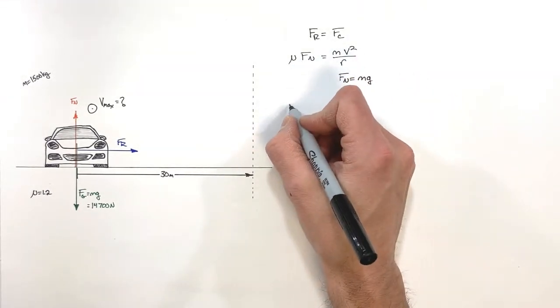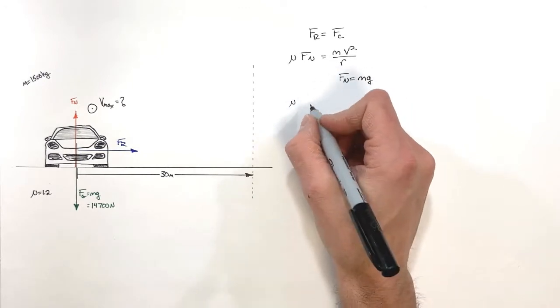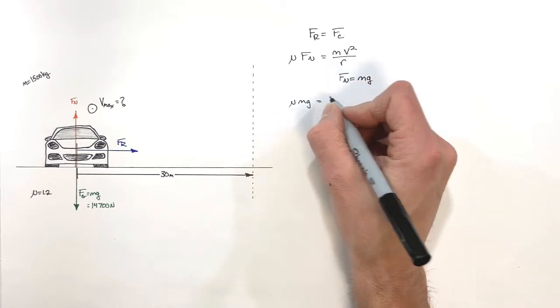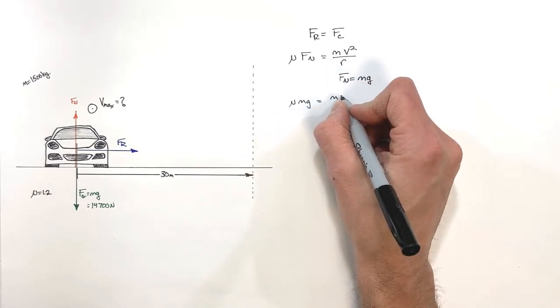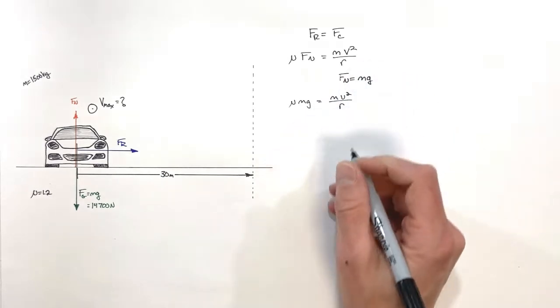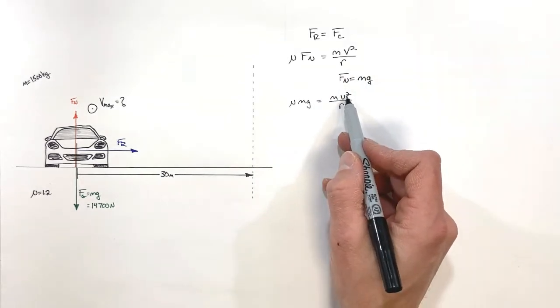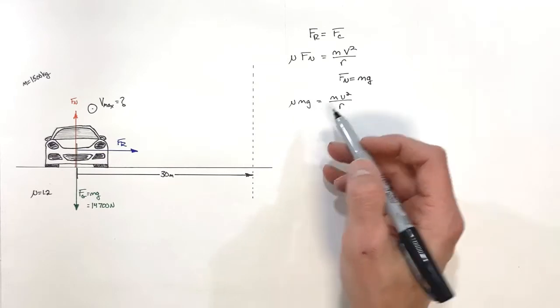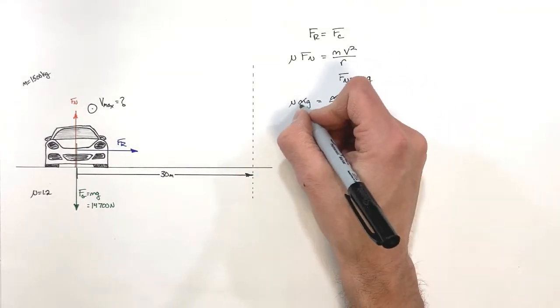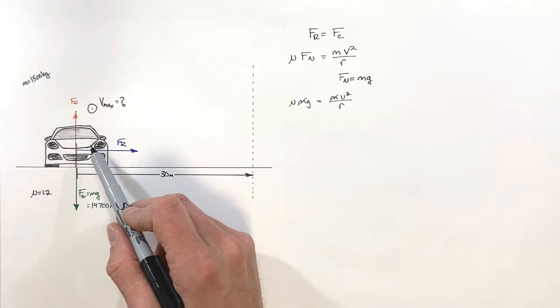So I'll substitute this in here. We'll find that μ, the coefficient of friction, times mg is equal to m v squared over r. Remember, we're trying to solve for v here. And before we plug in numbers, we can actually cancel a few things out here, and we'll see the mass of the car is actually irrelevant in this problem.